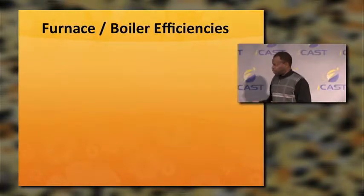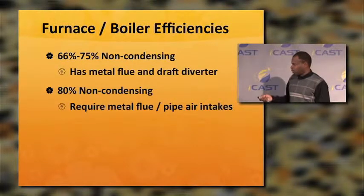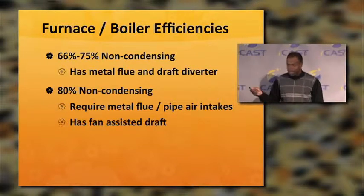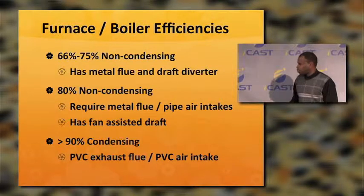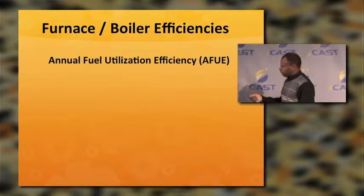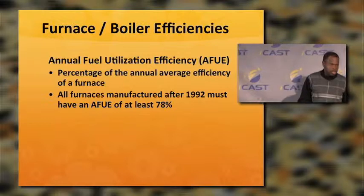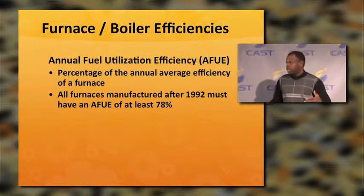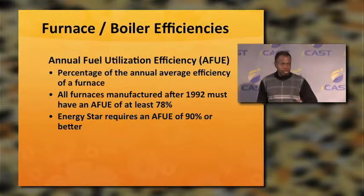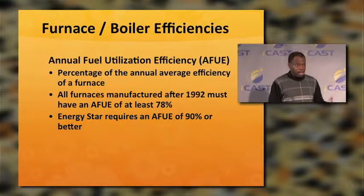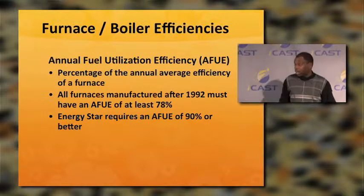Furnace and boiler efficiency: 66–75% non-condensing has a metal flue and a draft diverter. 80% non-condensing requires metal flue pipes with fan-assisted intake. 90% condensing has PVC exhaust flues and PVC air intake. This is the Annual Fuel Utilization Efficiency (AFUE) — the percentage of annual average efficiency. Energy Star requires an AFUE of 90% or better, so a 90% or 92% furnace is much more energy efficient.